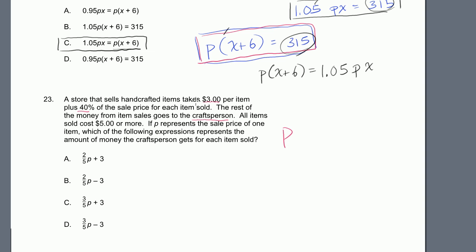So you start off with p. That's how much the customer gives. And then the store takes $3, so p minus 3 plus 40% of the sale price. So not 40% after the $3. It says plus 40% of the sales price. So the store is going to take another 40%, 0.4 or 0.40 times the sales price. So the store takes $3 and then 40% of the sales price, and this is what the craftsperson gets. This is p minus 0.4p is 0.6p, and then you have the minus 3. That's what the craftsperson gets.